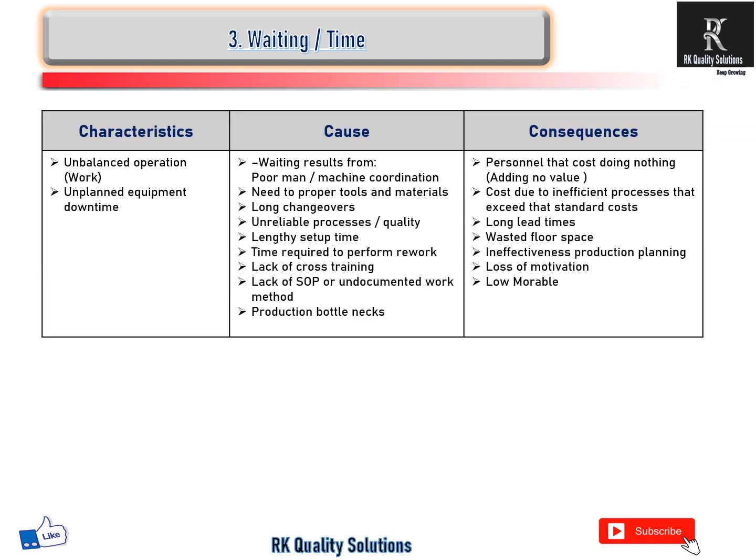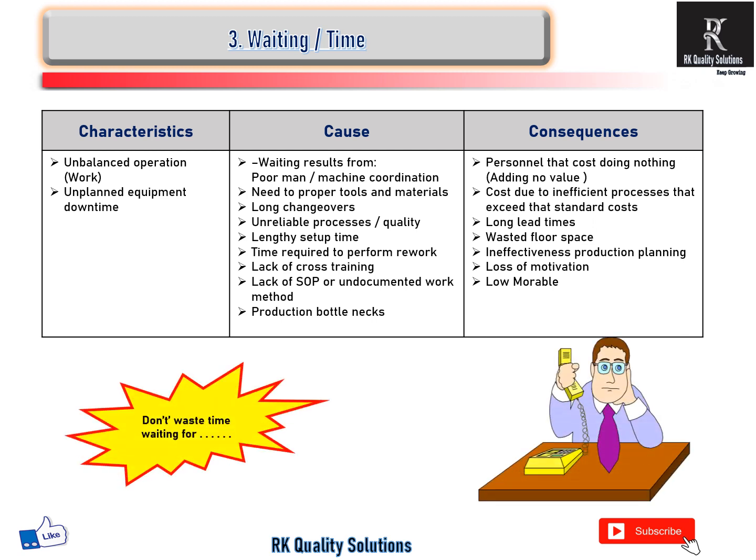This table covers waiting waste. Characteristics: unbalanced operation work and unplanned equipment downtime. What causes it: poor manpower and machine coordination, need for proper tools and material, long changeover, unreliable process, lengthy setup, time required for rework, lack of cross-training, lack of SOP, uncontrolled documents, and production bottlenecks. Consequences: personnel costs doing nothing of added value, cost due to insufficient processes exceeding standard cost, long lead times, waste of floor space, ineffective production planning, loss of motivation, and low morale. Waiting is totally non-value-added — don't waste time, don't wait for the next process or operation.